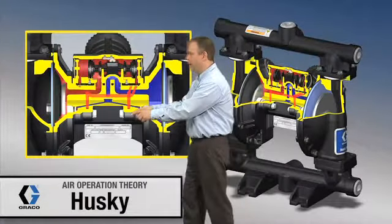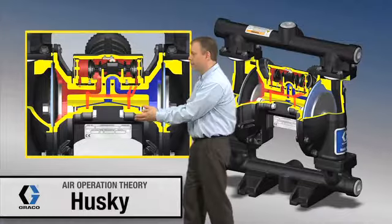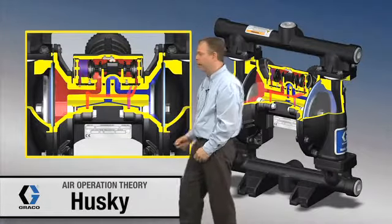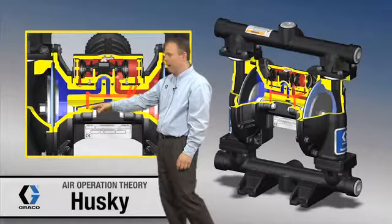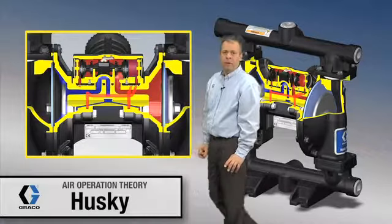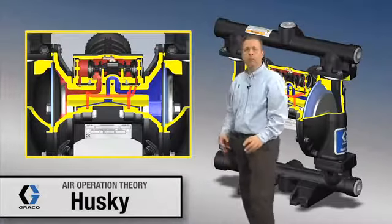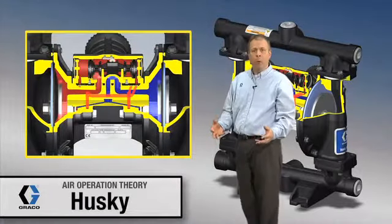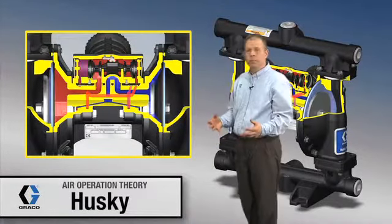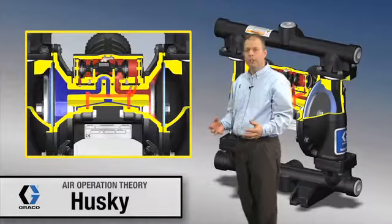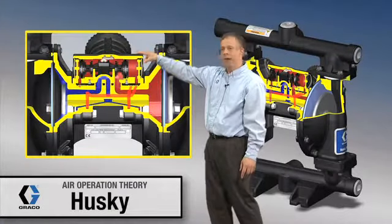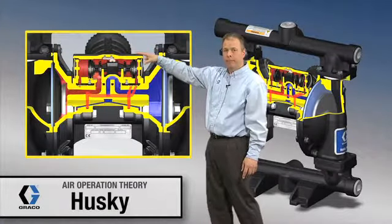Down here behind this first diaphragm there's a poppet valve, and over on the other side another poppet valve. All those poppet valves do is act as a momentary open air switch, and they're used to dump air pressure on one side or the other of the air valve up here.